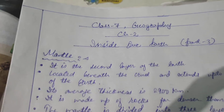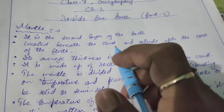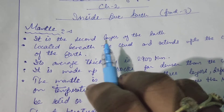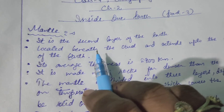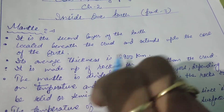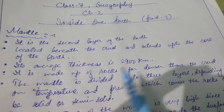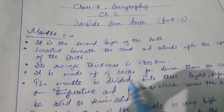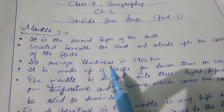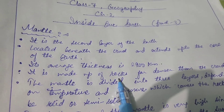The mantle is the second layer of the Earth, located beneath the crust and extending up to the core. The topmost layer is the crust, as you all know. Beneath the mantle, the core is found.